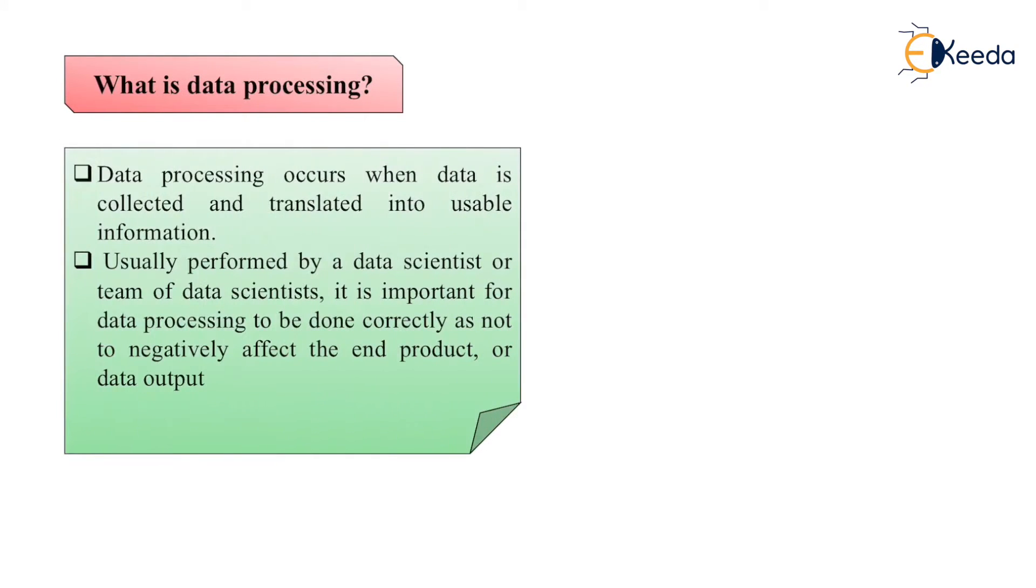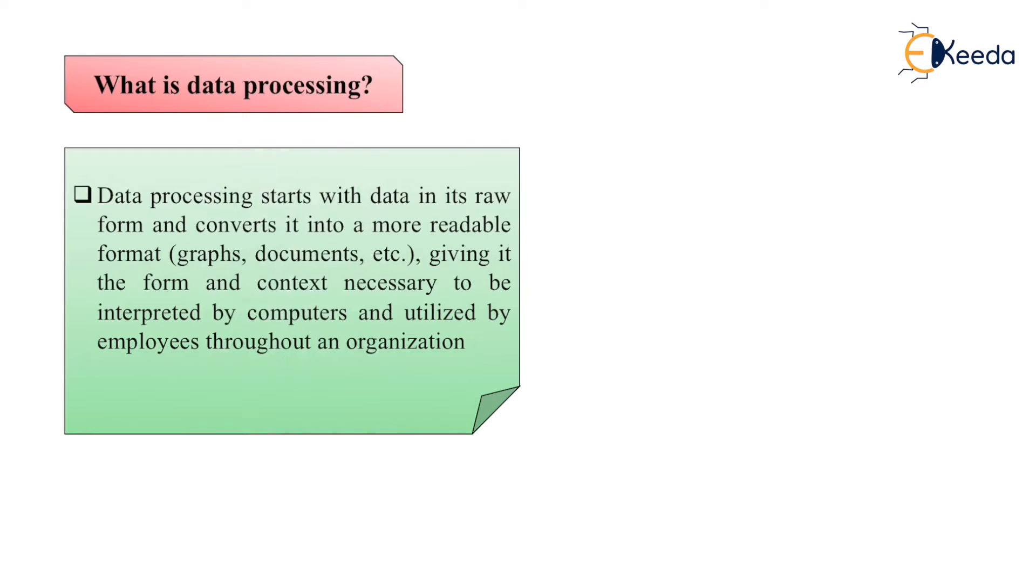What is data processing? Data processing occurs when data is collected and translated into usable information, usually performed by a data scientist or team of data scientists. It is important for data processing to be done correctly so as not to negatively affect the end product or data output. Data processing starts with data in its raw form and converts it into a more readable format like graphs, documents, etc., giving it the form and context necessary to be interpreted by computers and utilized by employees throughout an organization.